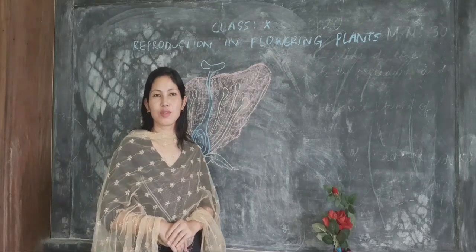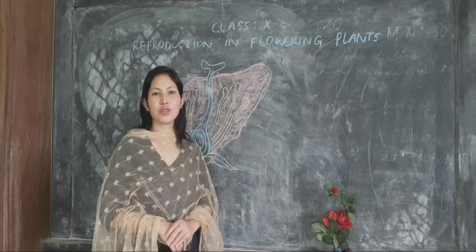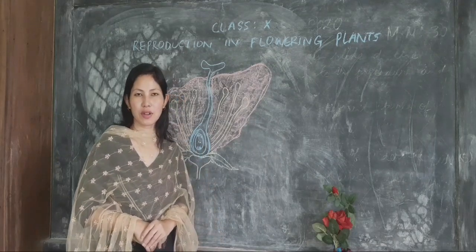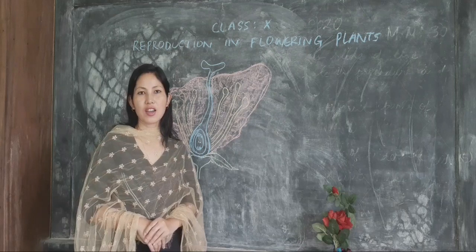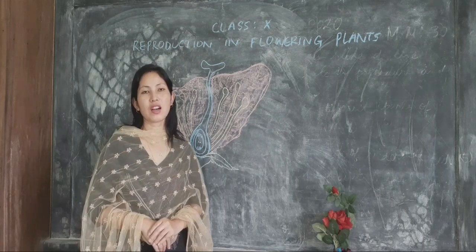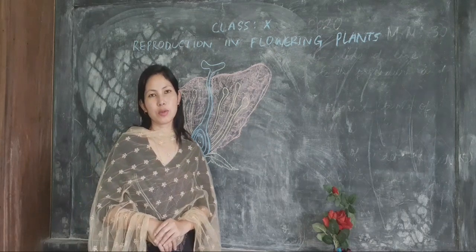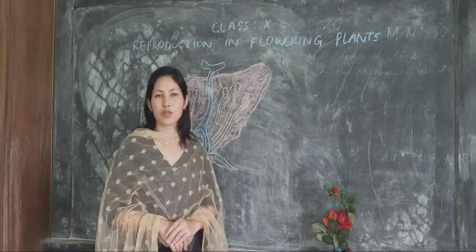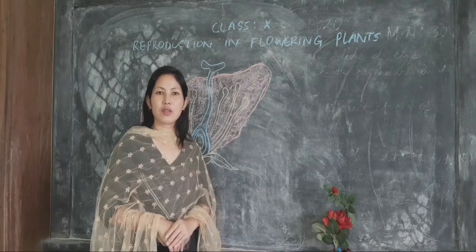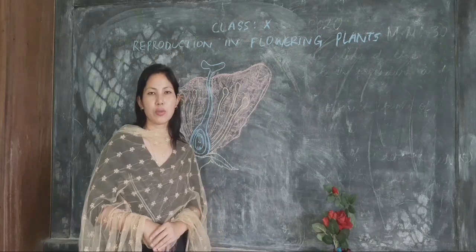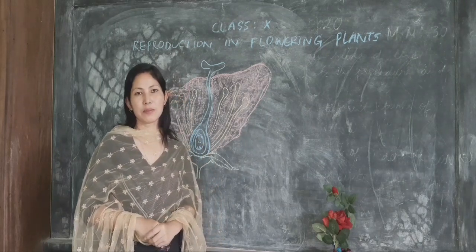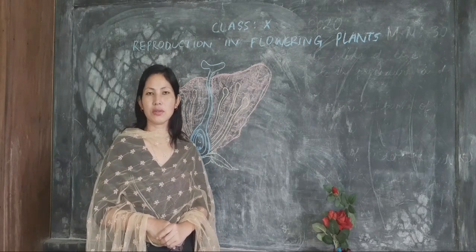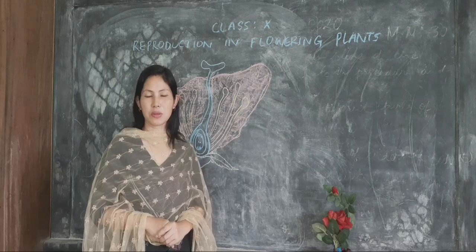Hello everyone. In this video we are going to discuss the topic reproduction in flowering plants, from the chapter 'How Do Organisms Reproduce' from Class 10. Flowering plants are one of the major groups of the kingdom Plantae, and they also belong to the division Angiospermae.